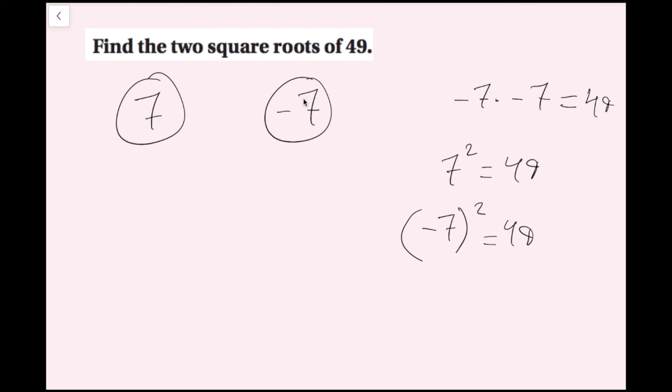So I know that 7 squared equals 49, and negative 7 squared also equals 49. Therefore my two square roots are 7 and negative 7. Another way to write this is plus or minus 7 — either way is fine.